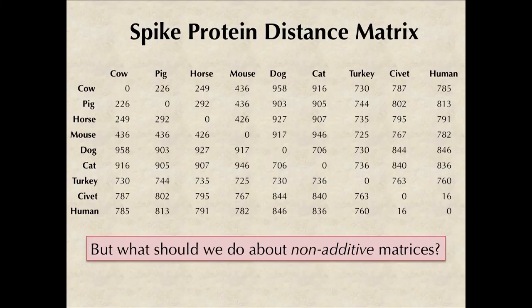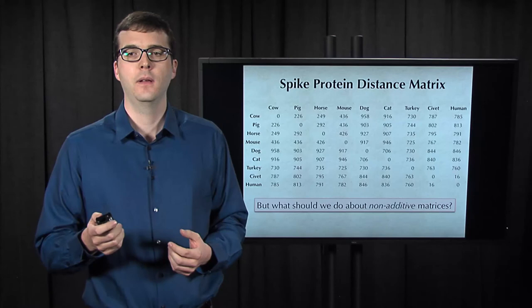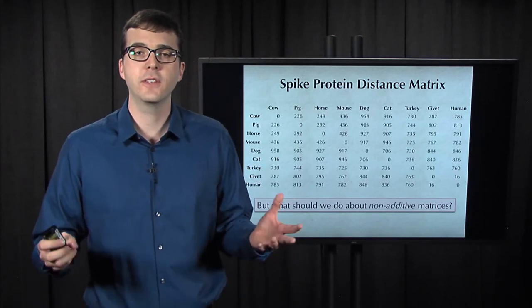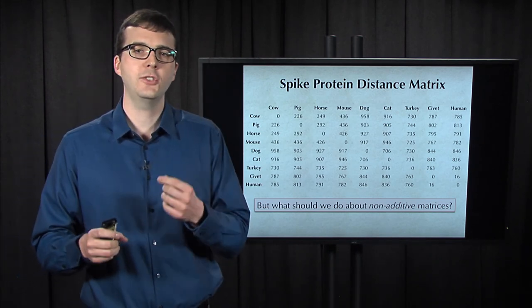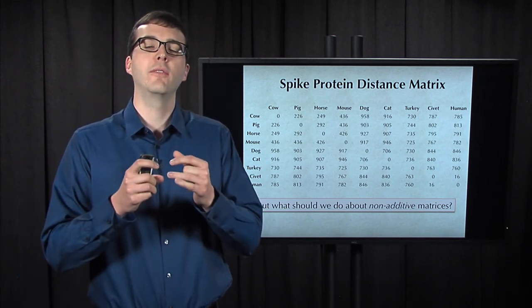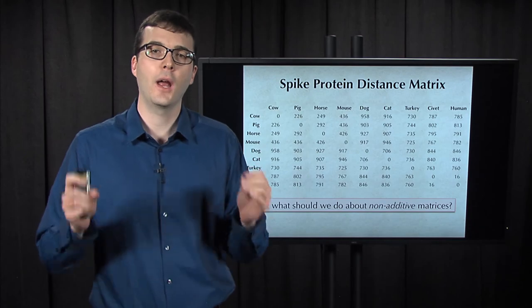But regardless of what your morning coffee tastes like, the fact remains that we had to fudge the coronavirus distance matrix a little bit in order to get an additive matrix. In fact, the majority of distance matrices that we encounter in practice are going to be non-additive. So our question is, how can we construct an evolutionary tree for these non-additive matrices?